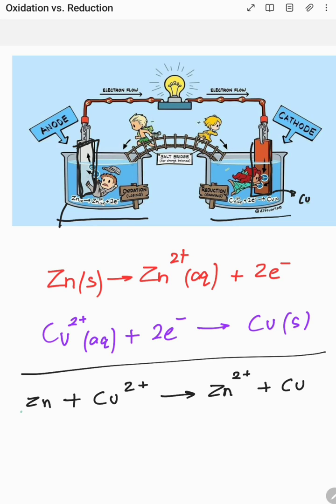Zinc has the tendency to lose electrons, so it loses two electrons via this reaction. These two electrons, with the help of a salt bridge, transfer to the cathode on the right side, which is the copper electrode.